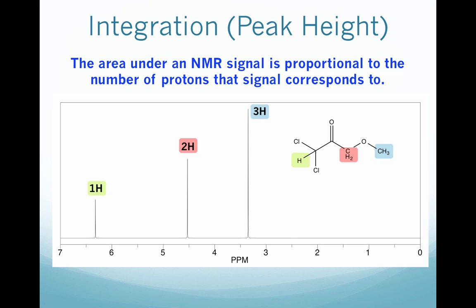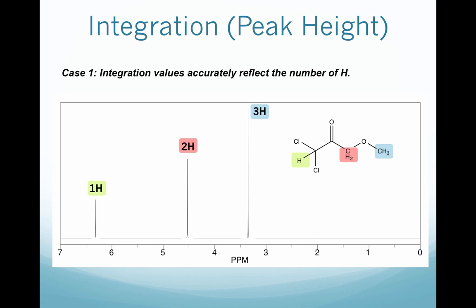Keeping in mind that the area under the NMR signal is proportional to the number of protons it corresponds to, we'll look at some different cases as to how your spectrum may be presented. The first is the simplest case where the integration values accurately represent the number of hydrogen that the signal corresponds to. Here we have three different types of hydrogen — one in green, one in red, and one in blue — corresponding to a compound. The first signal corresponds to 1 hydrogen, the second to 2 hydrogen (a CH2 group), and the third to 3 hydrogen (a methyl group).